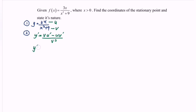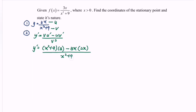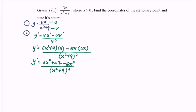Applying the quotient rule: y′ = (x² + 9)·3 − 3x·2x, all over (x² + 9)². Simplifying the numerator: 3x² + 27 − 6x², giving y′ = (27 − 3x²) over (x² + 9)².